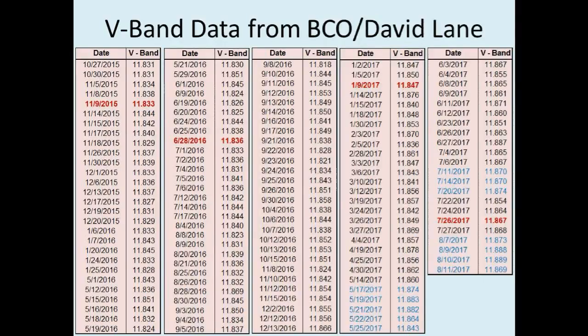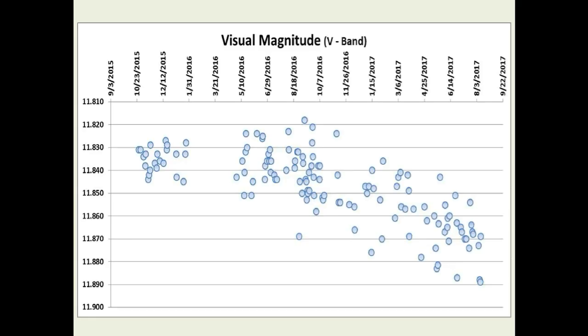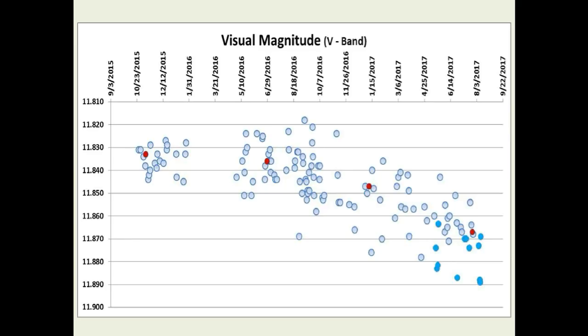Here again is the complete list of measurements of Tabby Star taken in the V-band from October 27th of 2015 through August 11th of 2017. Creating a scatter plot of all the data points results in the following graph. The data points colored in blue were taken during the three short-term dimming events and are not being considered in fitting the best curve. The four data points colored in red are the best estimate set of points with the highest probability of intersecting the best fit curve of the accelerating long-term dimming curve.